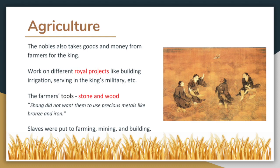The nobles could also put farmers to work on different royal projects like building irrigation, serving in the king's military, etc. The farmers used tools made of stone and wood. Since they were low class, the Shang did not want them to use precious metals like bronze and iron.